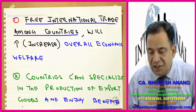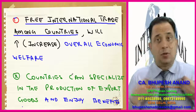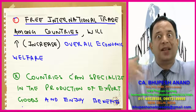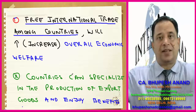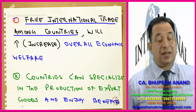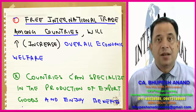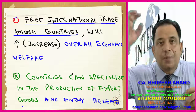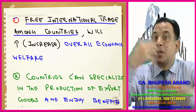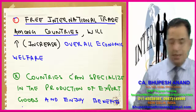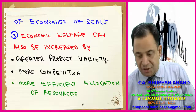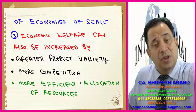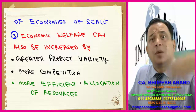Second point: countries can specialize in the production of export goods and enjoy benefits of economies of scale. If my focus is to teach finance, I will create better results than if I am doing all different subjects. Similarly, if a country specializes in a particular product or sector, it can emphasize that and enjoy specialization benefits and economies of scale. The real case study is China — China is enjoying economies of scale by producing more units.